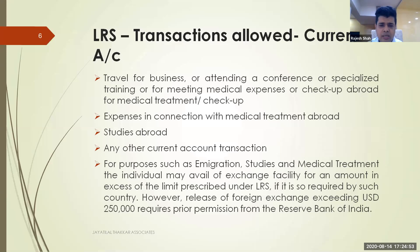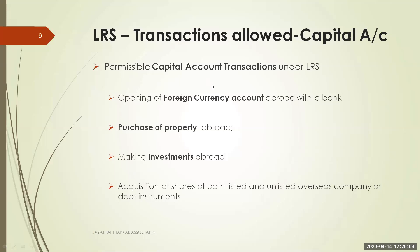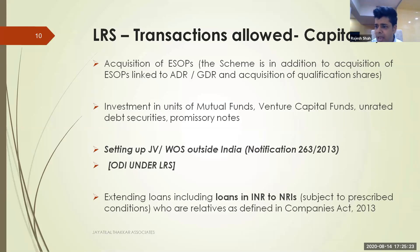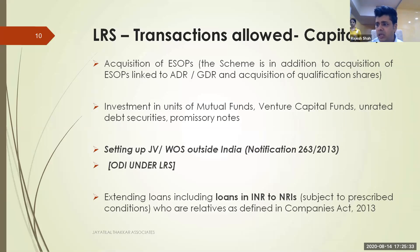For the LRS procedure, you go to an authorized dealer and submit Form A2 along with a declaration stating the remittance is within the $250,000 limit. A PAN number is compulsory — without it, the bank will not process the application. The authorized dealer verifies the form, updates their records, and allows the remittance. A separate reporting called FETERS (Foreign Exchange Transactions Electronic Reporting System) must be done by the banker, not by the individual.